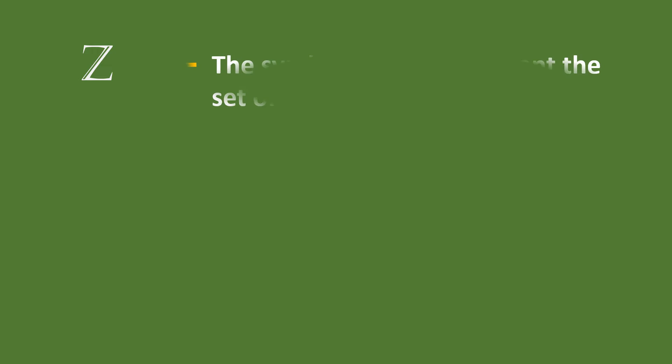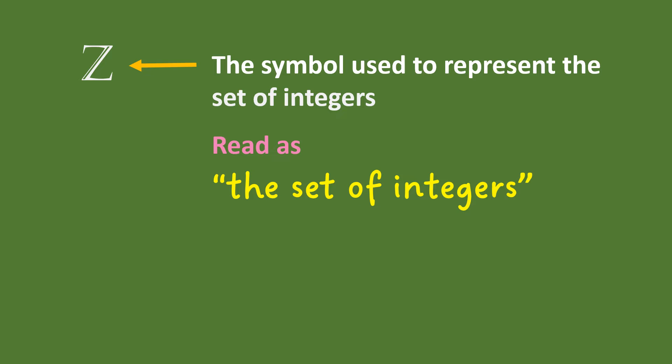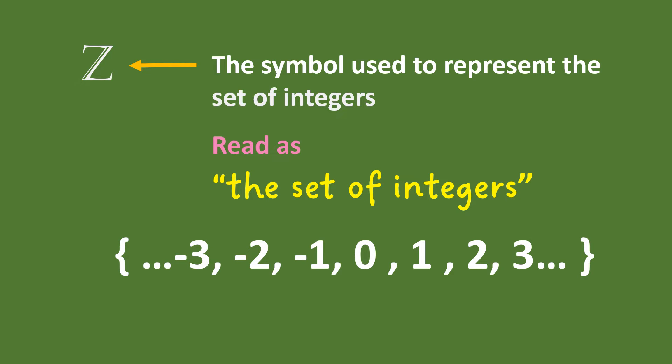The capital letter Z is the symbol used to represent the set of integers. The set of integers are from negative infinity, negative 3, negative 2, negative 1, 0, 1, 2, 3, until positive infinity.